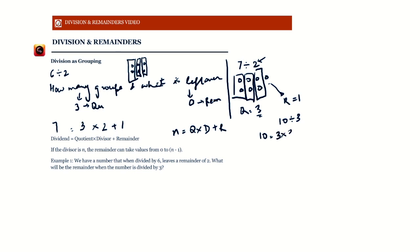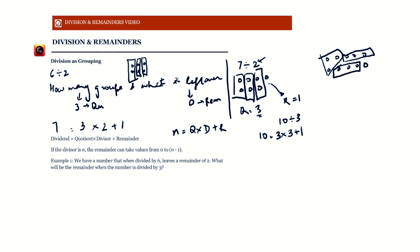If I have 10 marbles and divide them into groups of 3, I make one group of 3, two groups of 3, three groups of 3 — so the quotient is 3 meaning there are three groups of 3, and one marble is left over as the remainder.